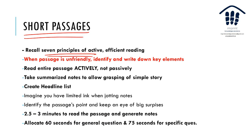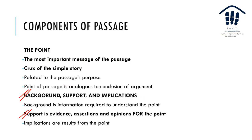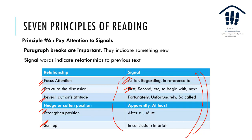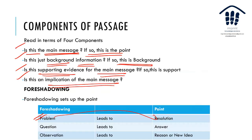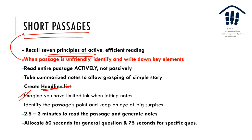For short passages, recall principles of activity: be efficient when the passage is unfriendly. Identify and write down key elements. Read actively, not passively — be very focused. Take summarized notes to grasp the simple story. Create a headline list — imagine you have limited ink, don't jot down everything. Identify the passage's point of view and watch for big surprises using signal words like 'fortunately,' 'unfortunately,' 'apparently,' 'after all.' Target: 2.5 to 3 minutes to read and generate notes; 60 seconds for a general question and 75 seconds for a specific question.